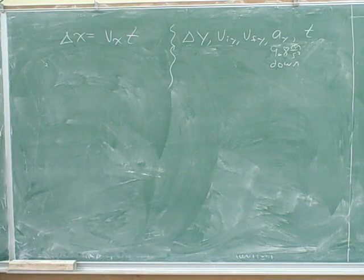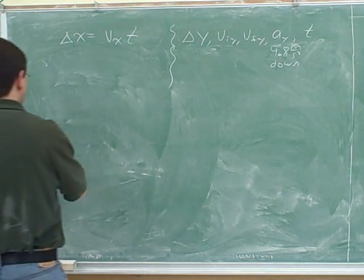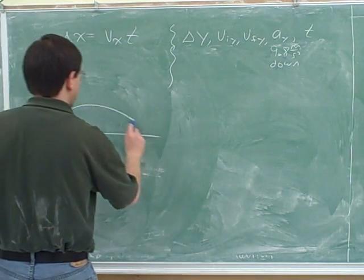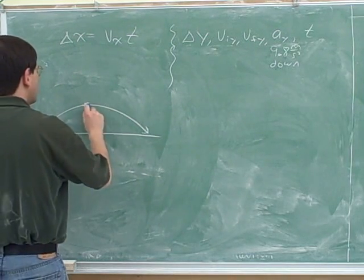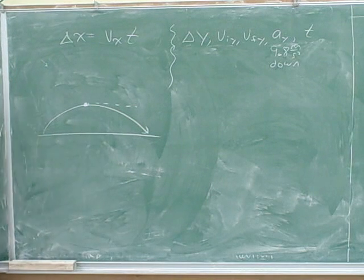What do we know about the velocity of the... Well, first of all, what does the object's path look like in projectile motion? Parabolic. Yeah. So we're expected to know that in projectile motion, objects have parabolic paths.